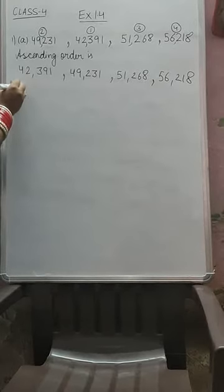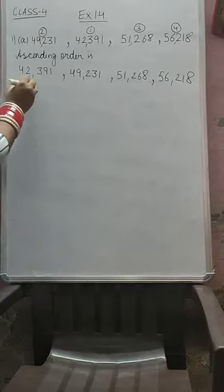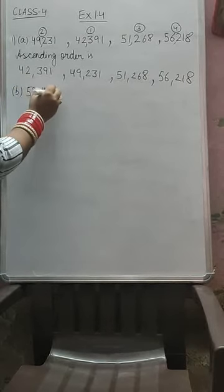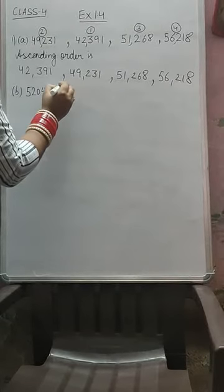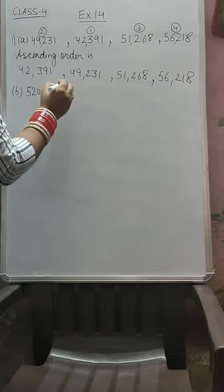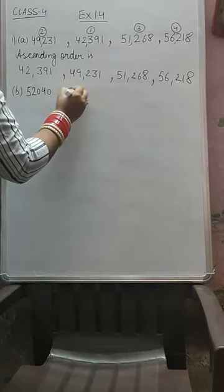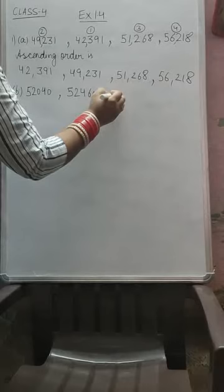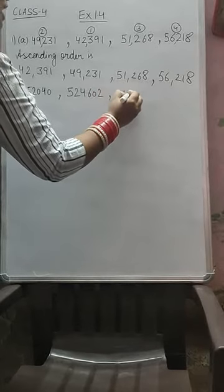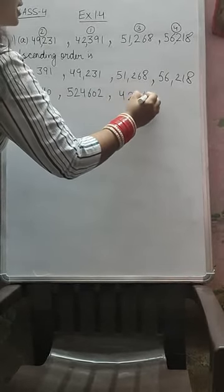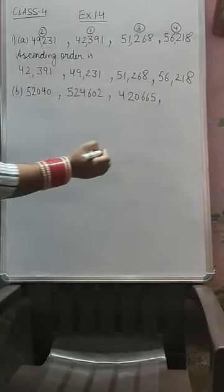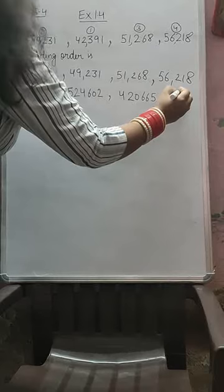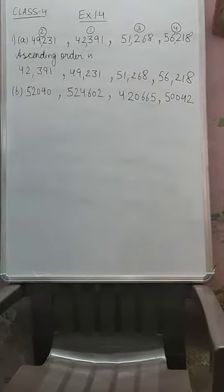Now I will try Part B. The first number is 52,040. The second number is 5,24,602. Next we have 4,20,665. And the last number is 50,042. First we have to mark the periods.